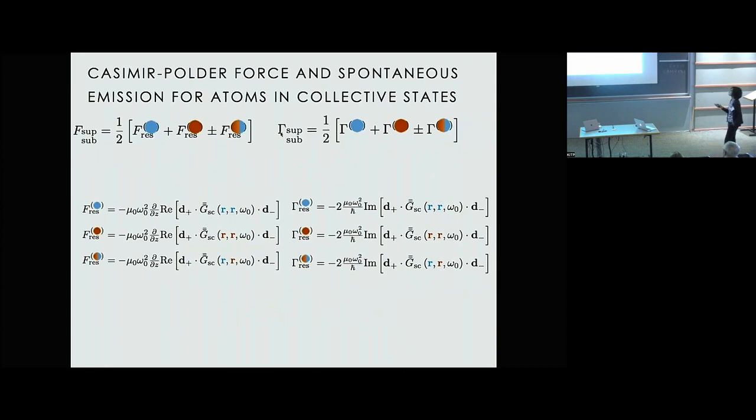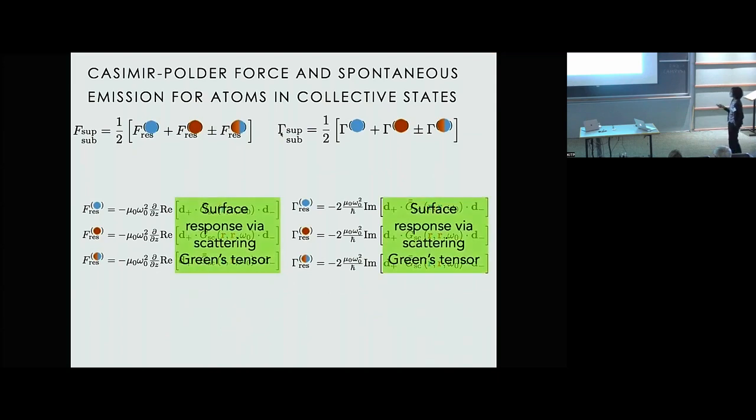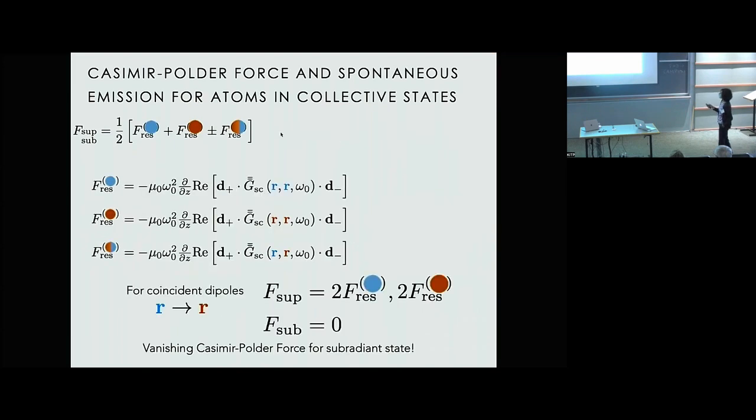And we can look at the force and the gamma more explicitly side by side. And we see that the super and the sub-radient forces, as well as the gammas have a plus or a minus sign here. And depending on the atomic correlations, the full expressions are, of course, quite analogous. And these contain, of course, the surface response via the green sensor. And if we focus on the case where the dipoles are coincident with each other, we can see that the super-radient force can be enhanced to twice the resonant force value. And on the other hand, the sub-radient force can be made to vanish. Of course, this is an idealization and this is not realistic, but a lot of approximations will break down if we go to that limit. But that's the general trend anyway.